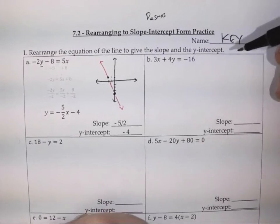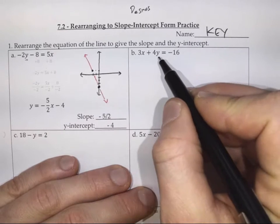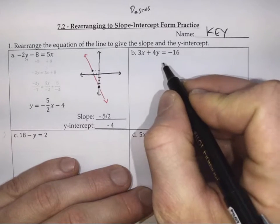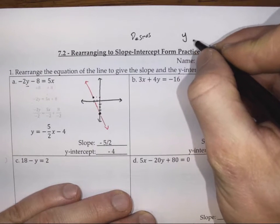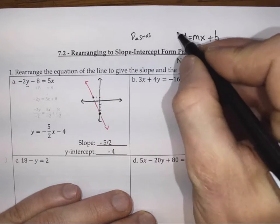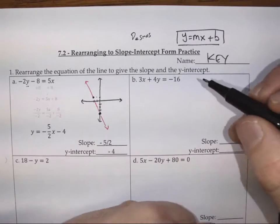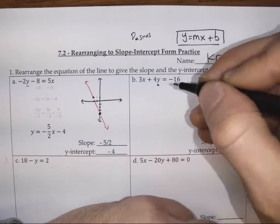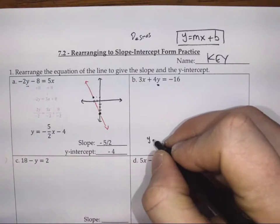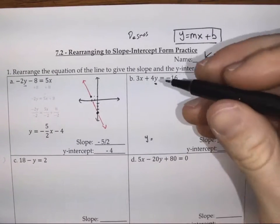So again, if we want to find out what the slope and the y-intercept are for this line, we need it to be in the form y = mx + b, which means y has to be isolated. We're going to try to get y by itself, so it's just y equals some things.